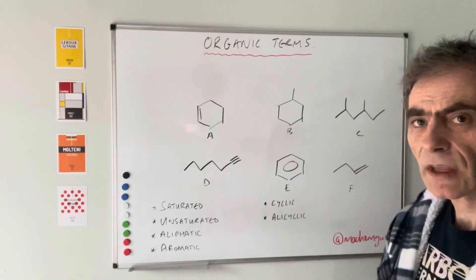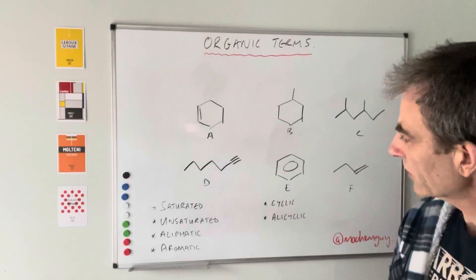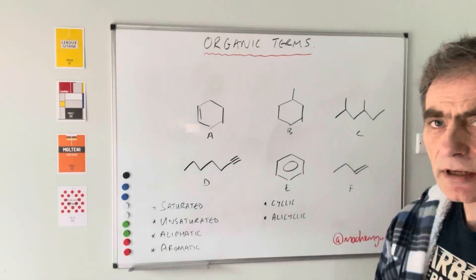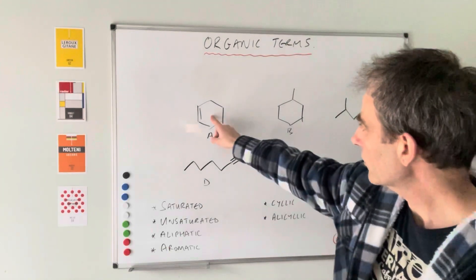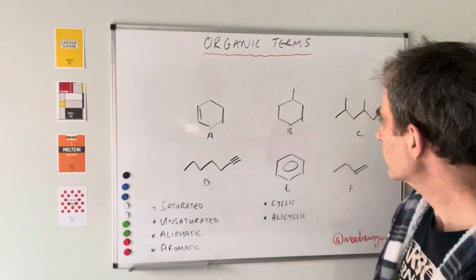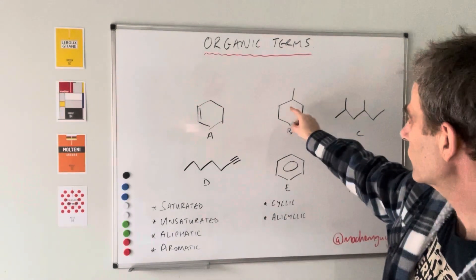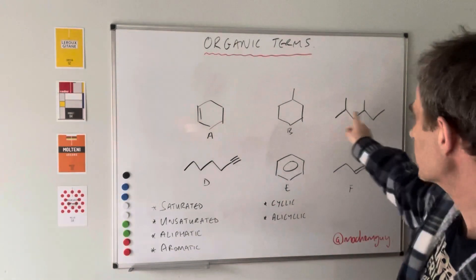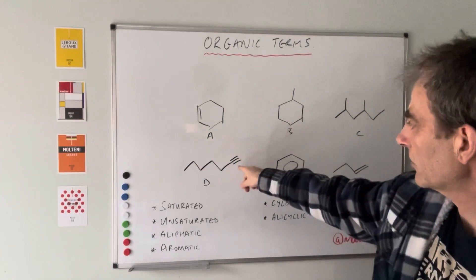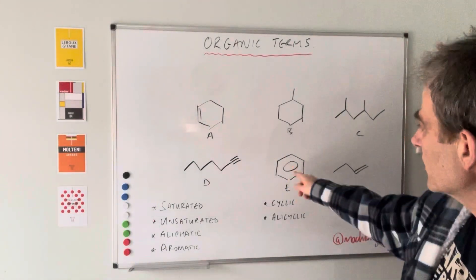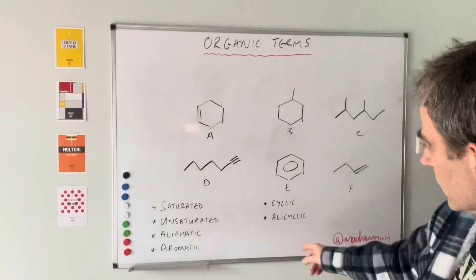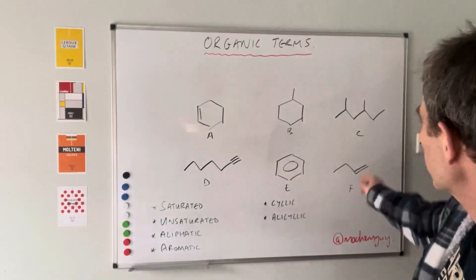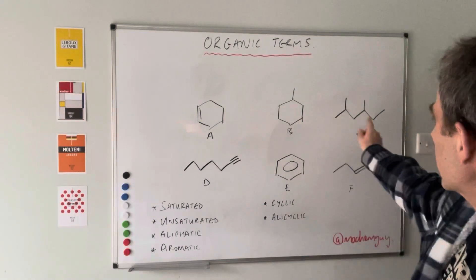A saturated organic compound only contains carbon-carbon single bonds. Not that one, because there's a double bond. B only has carbon-carbon single bonds, and C only has single bonds between the carbons. That one has a triple bond, so not that one. That's a benzene ring — not that one. And not that one — double bond. So the answer for saturated is B and C.